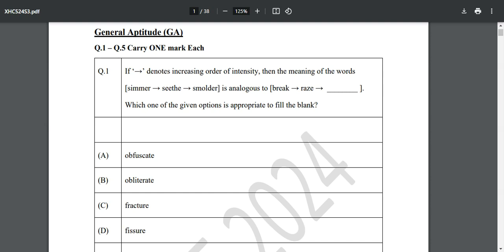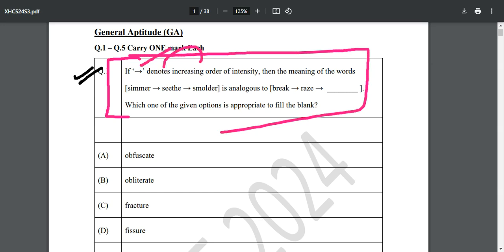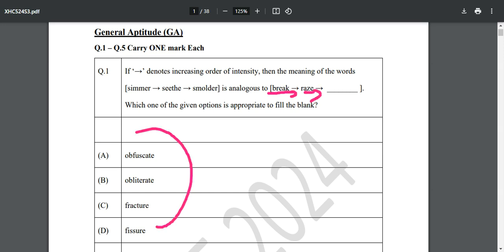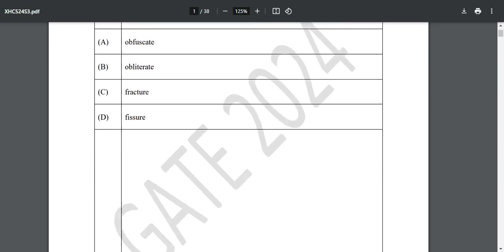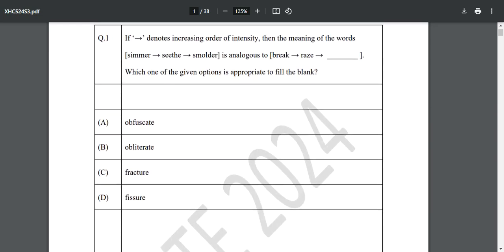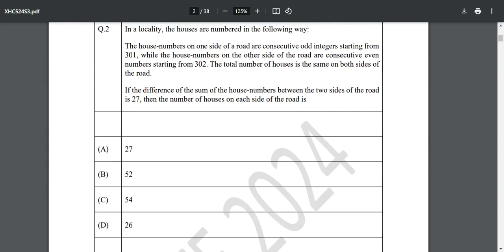This is just an example of how you can attempt. Question number one: if this denotes increasing order of intensity - simmer, seethe, smolder - then what is analogous? Break, raise, and what will be there? I just need to make sure I am knowing the meanings of these words. If I know the meaning of these words I can solve it. If I don't know the meaning, it's not possible logically to answer this correctly. I should know the meaning of fissure, fracture, obliterate, or obfuscate. I can assume I will take a little time in solving this.